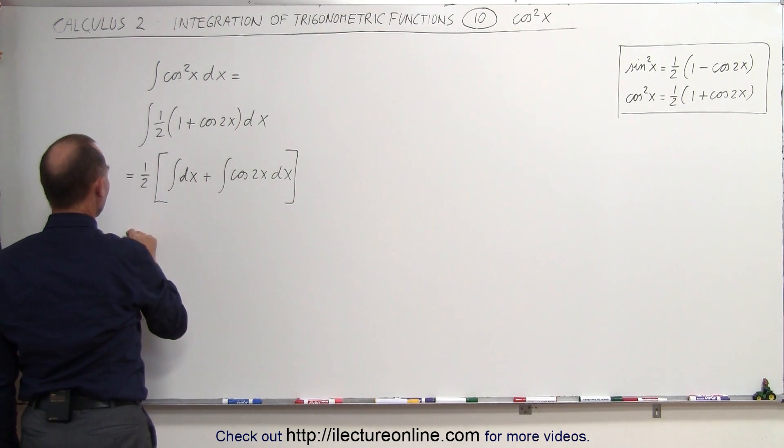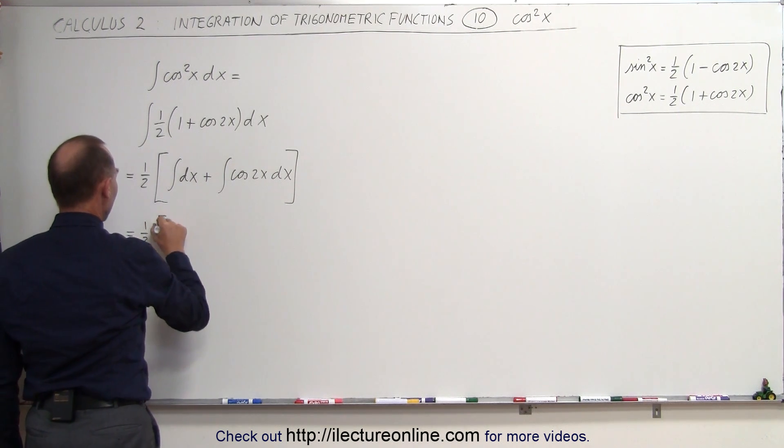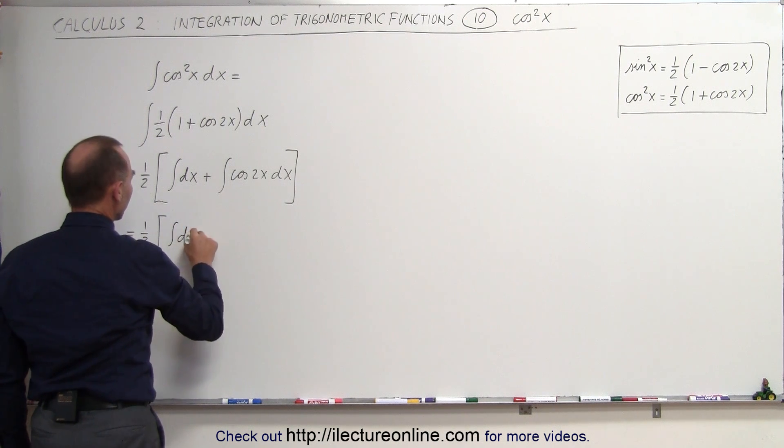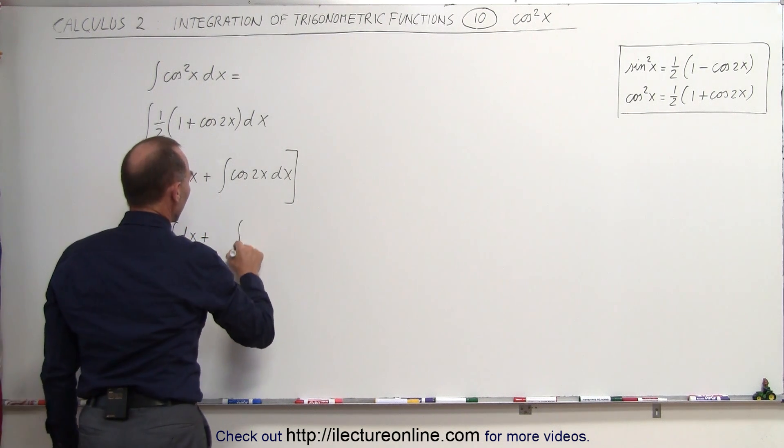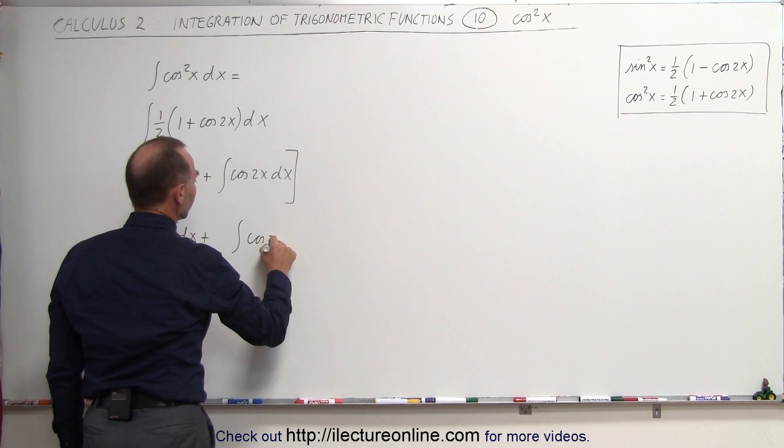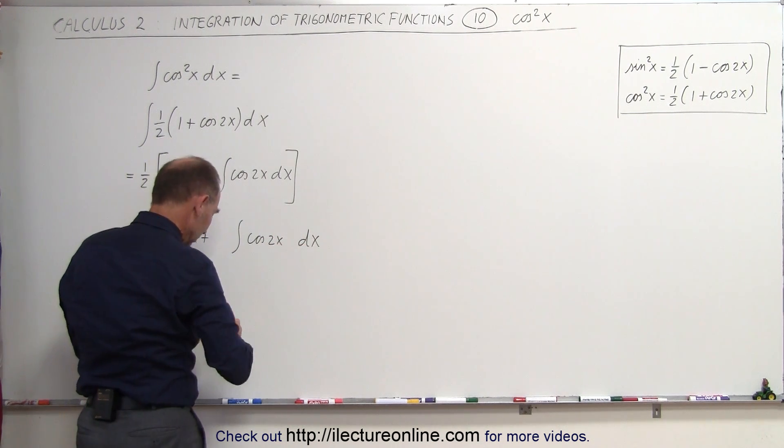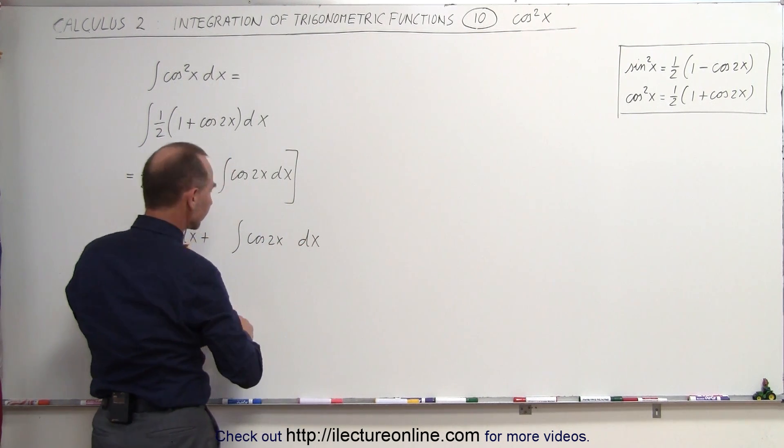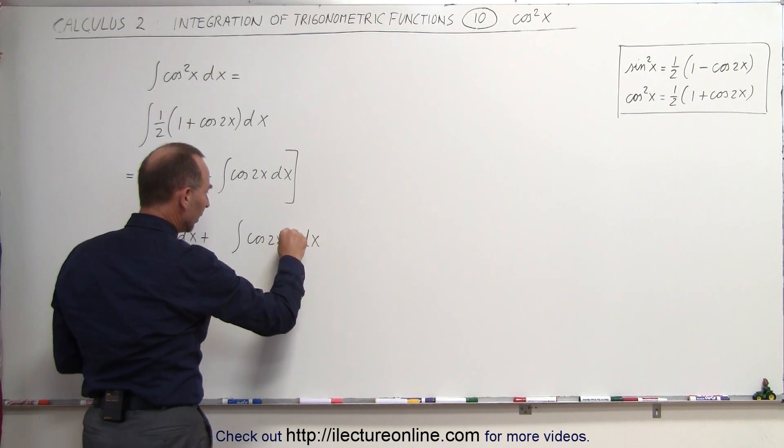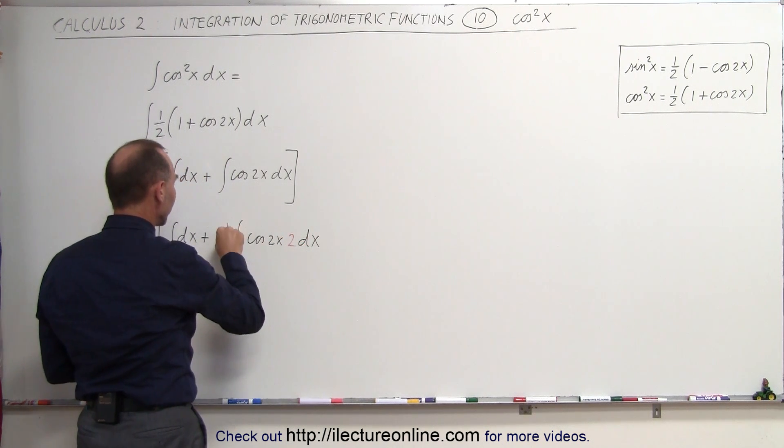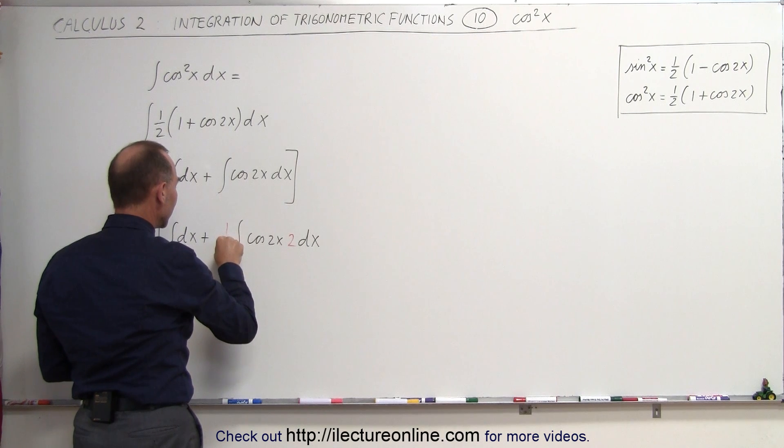So what we're going to do next is write this as 1/2 times the integral of dx, plus this is now going to become the cosine of 2x, and we need an extra 2 in there. We need a 2 in there, so if we multiply this by 2, we also have to divide it by 2, so we keep everything the same.